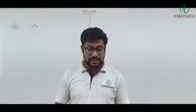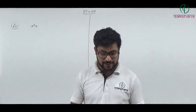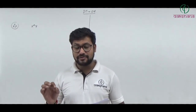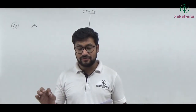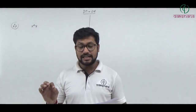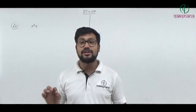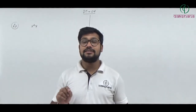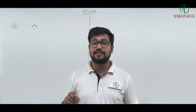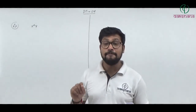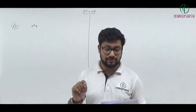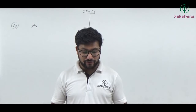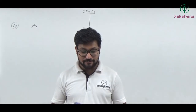Question number fifty-four: The proximal part of the oviduct is the fimbriated funnel, and the distal part forms the uterus. This statement is from NCERT. So uterus is the answer. Question number fifty-four's third option is the right answer.